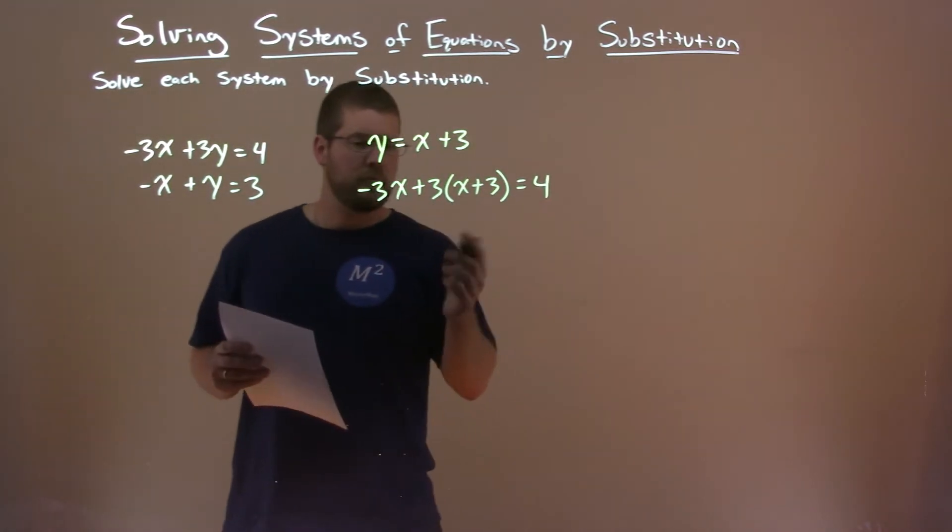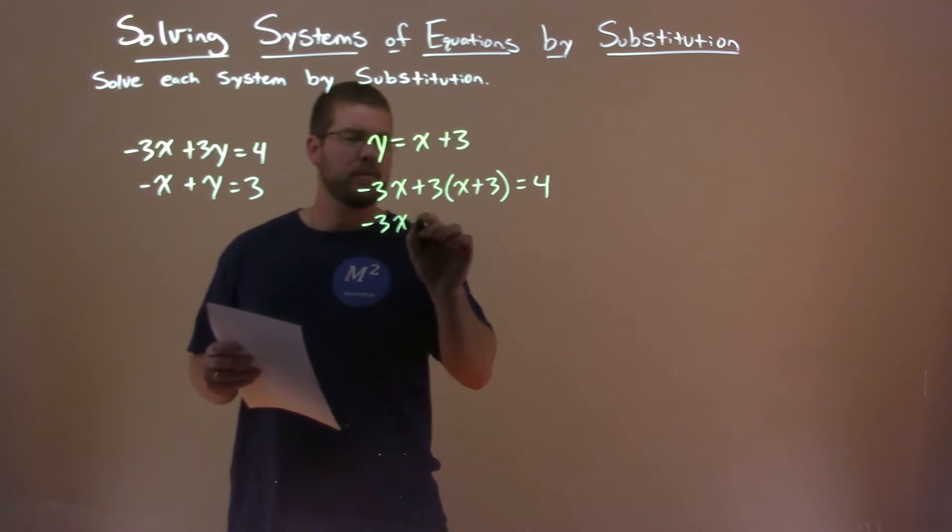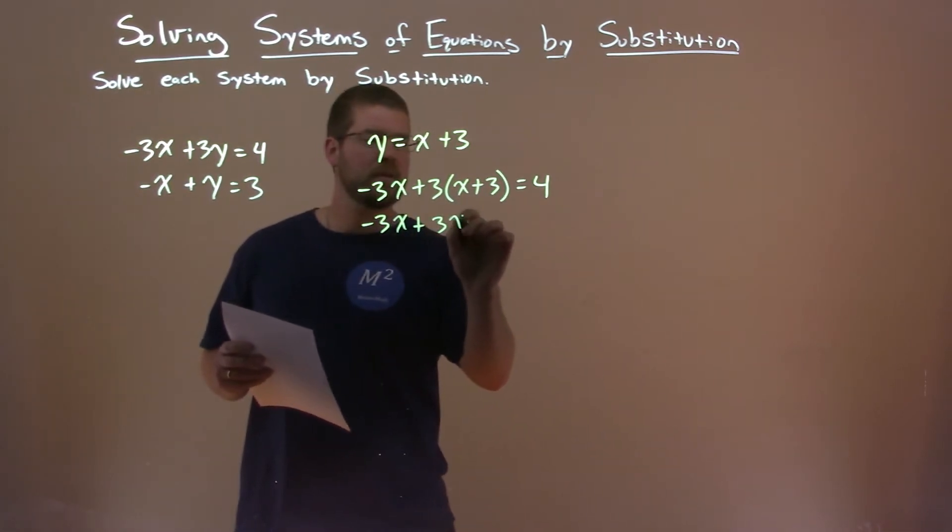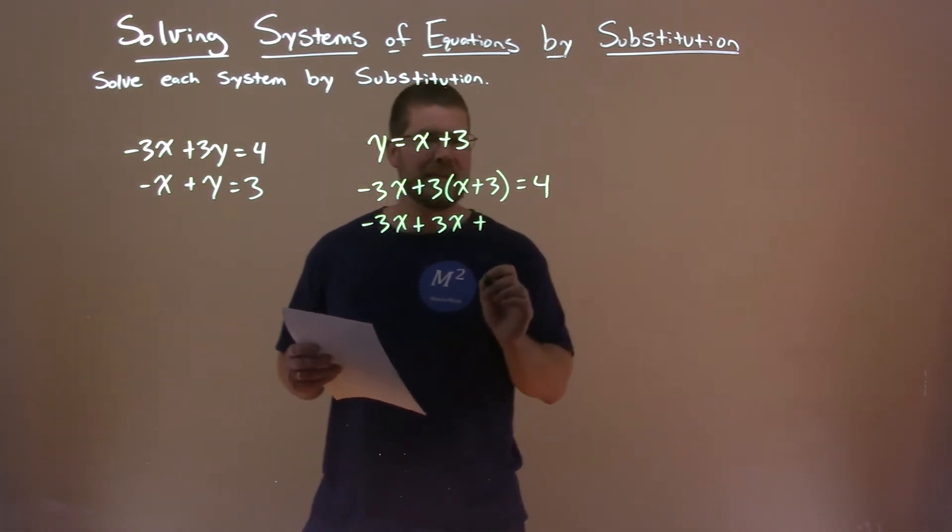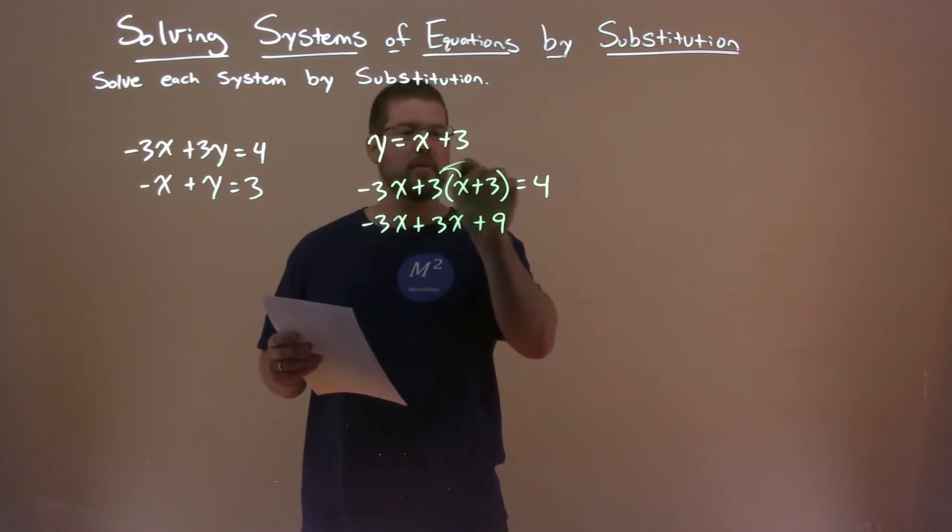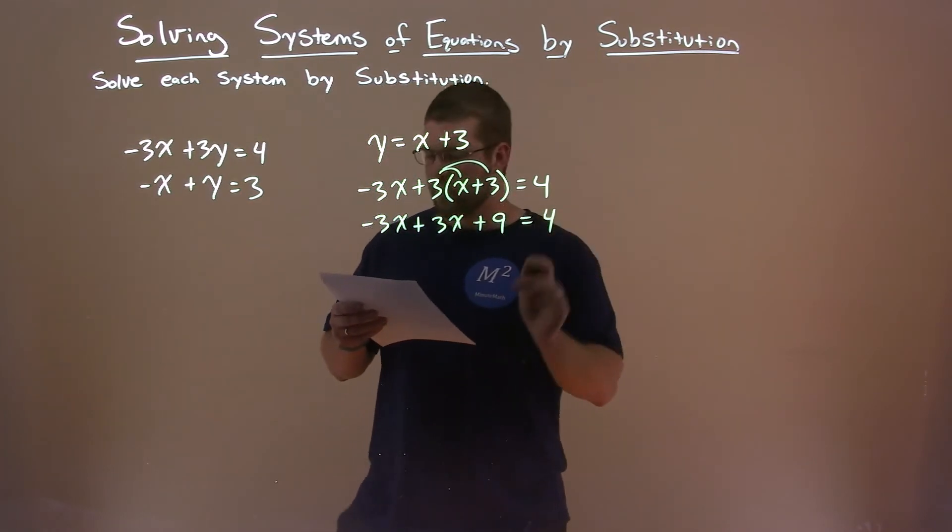From there, we're solving for x. Minus 3x here, plus 3 times x is 3x, plus 3 times 3 is 9. Make sure we distribute to both parts here. And that equals 4.